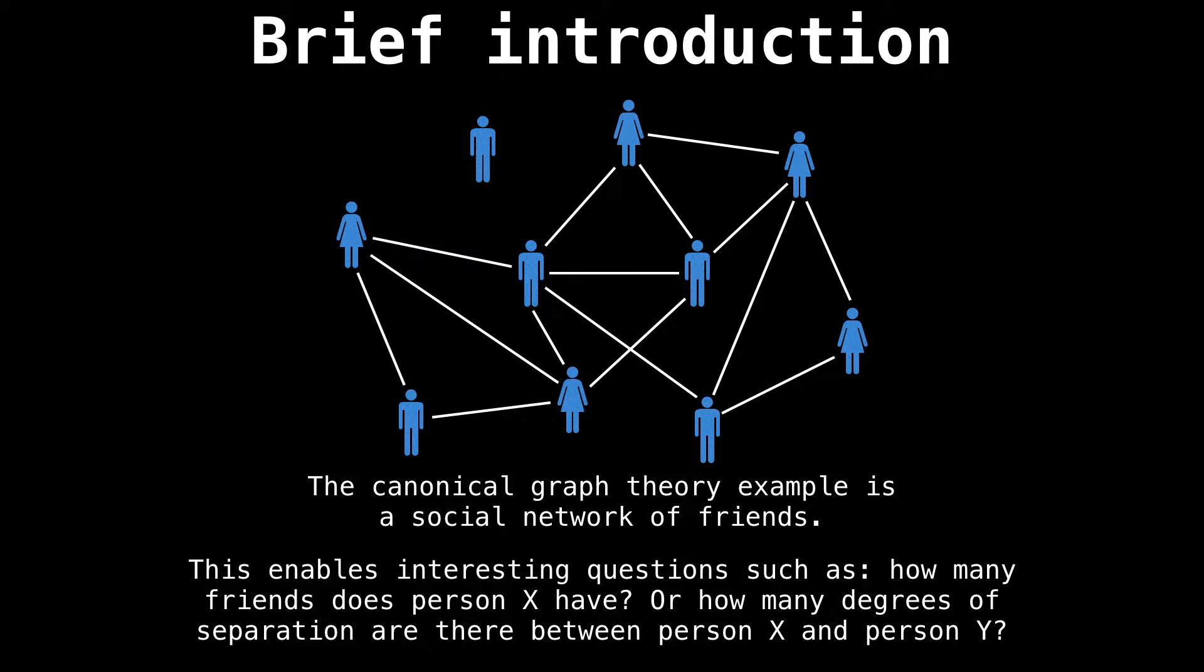Another canonical example of a graph theory problem is a social network of friends. A graph representation enables us to answer interesting questions such as how many friends does person X have, or how many degrees of separation are there between person X and person Y.